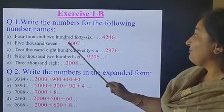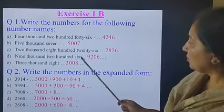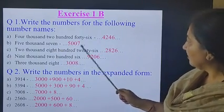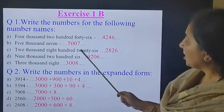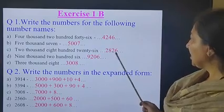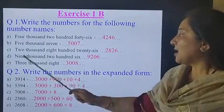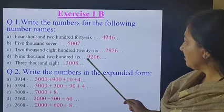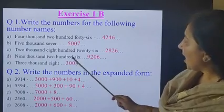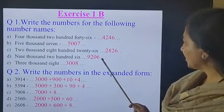Part C: 2,826. We have 2,000's; we write 2. We have 800; we write 8. We have 20, which means 2 tens; we write 2. And 6 ones; we write 6. Part D: 9,206. We have 9,000; we write 9. We have 200; we write 2. In 10's place we have no number; we write 0. In 1's place we have 6; we write 6. The number is 9,206.